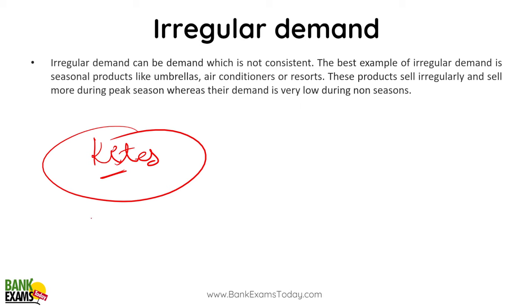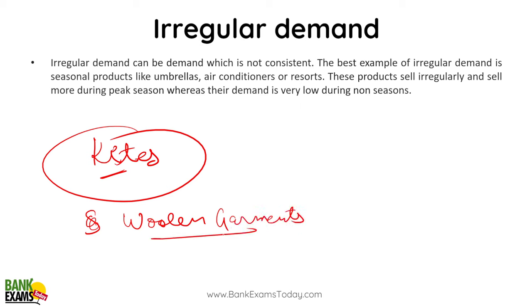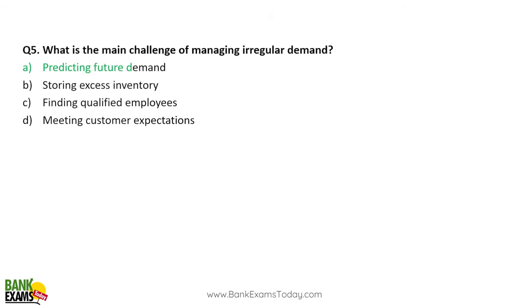Kites, sweaters, pullovers, and woolen garments also show irregular demand. You don't actually know how much demand there will be for woolen garments — people wear them in winter, and in India we're not always sure when winter will be. So demand for woolen garments is irregular. Similarly, demand for air conditioners, resorts, and umbrellas is all irregular. Predicting future demand is the main challenge for irregular demand products.